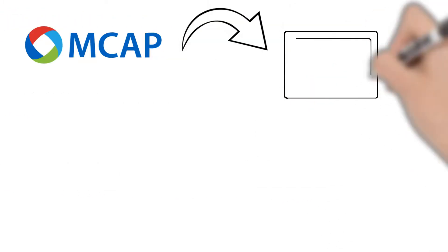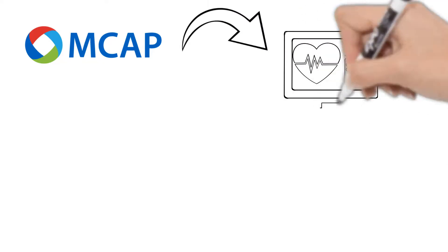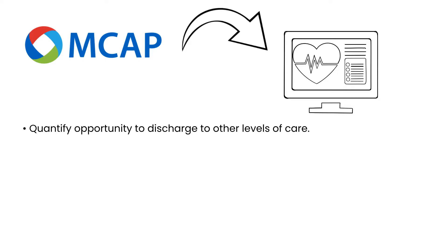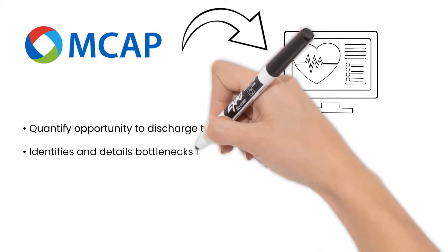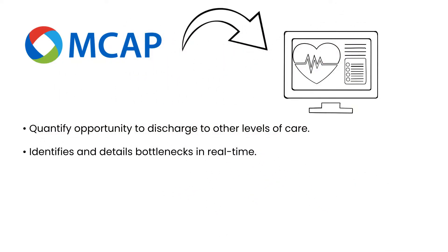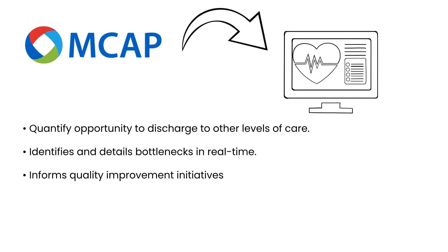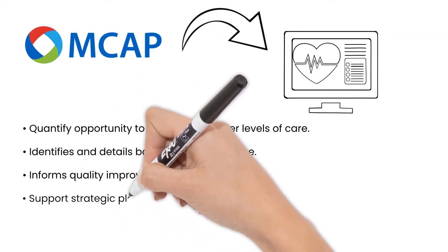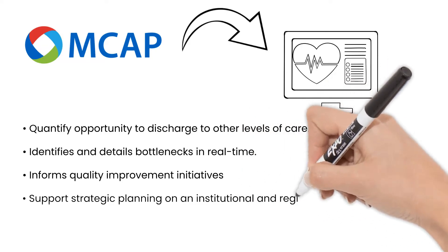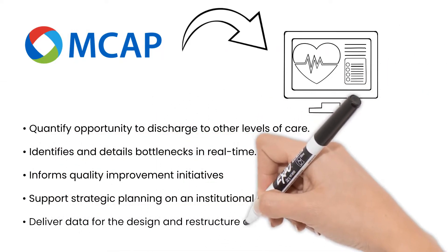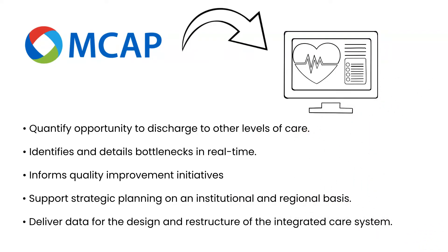Information from MCAP is available to the entire integrated care system to quantify the medically optimized opportunity to discharge to other levels of care, to provide a real-time and detailed understanding of the blockages preventing flow to other levels of care, to provide information that can help continuous quality improvement initiatives within an institution and provide data for strategic planning on both an institutional and area-wide basis, and to deliver evidence-based data to support the design and restructure of the integrated care system.